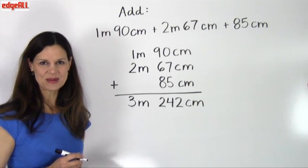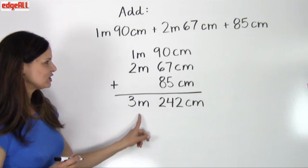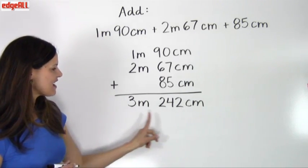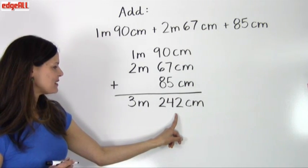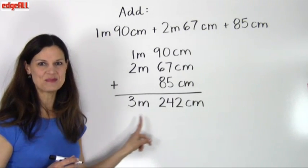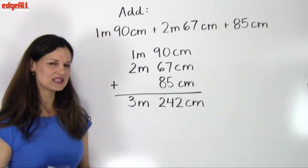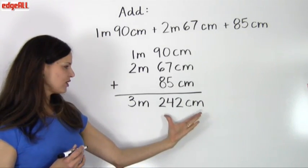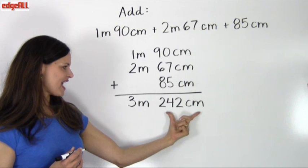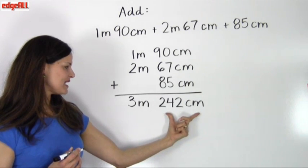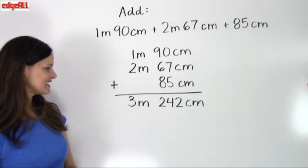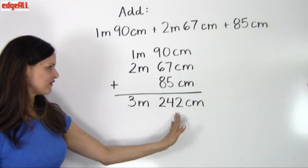My second step is going to be to look at the results of step one and see if any unit can be simplified to a bigger unit. So in this step, we're specifically looking at our smaller units and seeing if any of these can be converted to our larger unit.